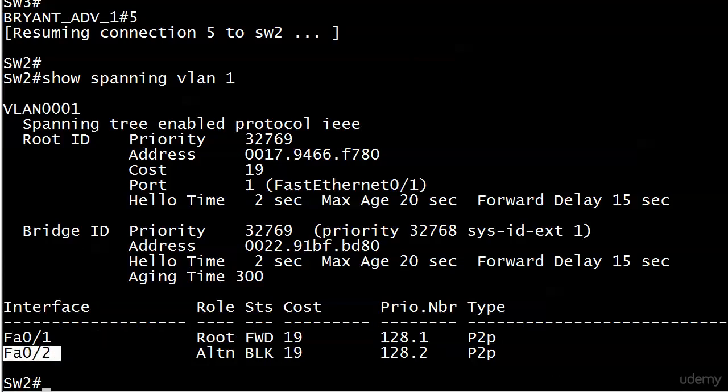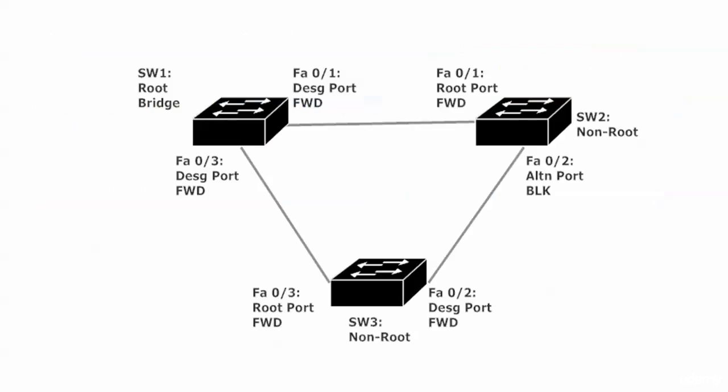The key is that Fast Ethernet Zero Two on Switch Two is in the alternate role — and that means it's blocking. So the theory absolutely holds up. We had to go on the switches and get the BID information to determine what the designated port was on the shared segment between Two and Three — but it's just that simple. This is a good practice exam question too, which is why I wanted to walk through it this way. The beauty of STP is that it has prevented switching loops by putting only one of our six ports into blocking mode, with just one to bring out if something goes wrong.